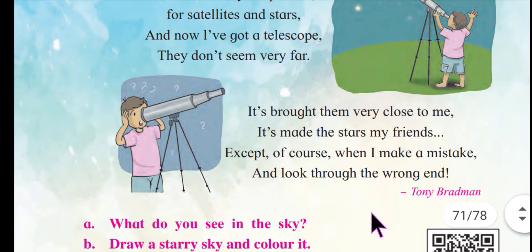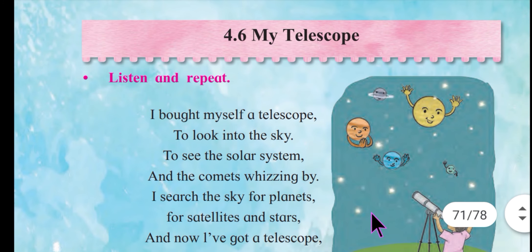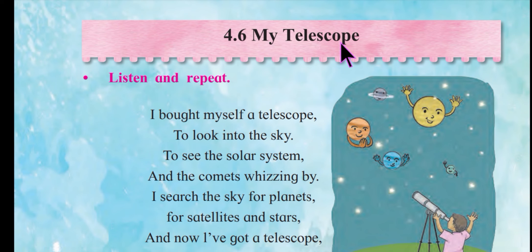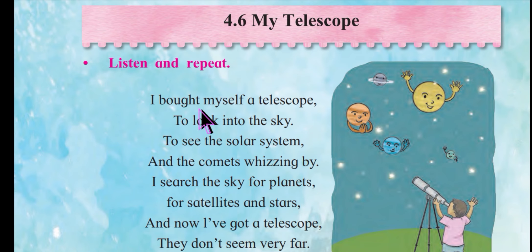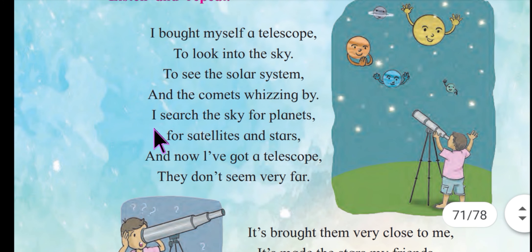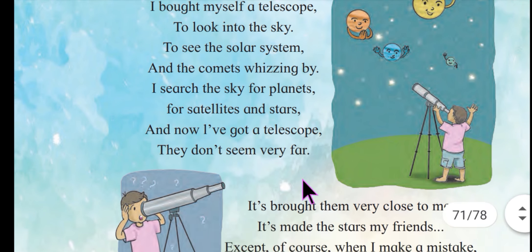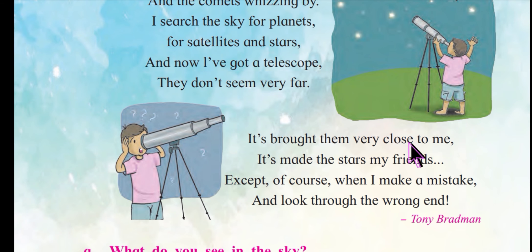I hope the poem is clear, students. Let's repeat the poem — My Telescope by Tony Bradman. I bought myself a telescope to look into the sky, to see the solar system and the comets whizzing by. I search the sky for planets, for satellites and stars, and now I've got a telescope, they don't seem very far.